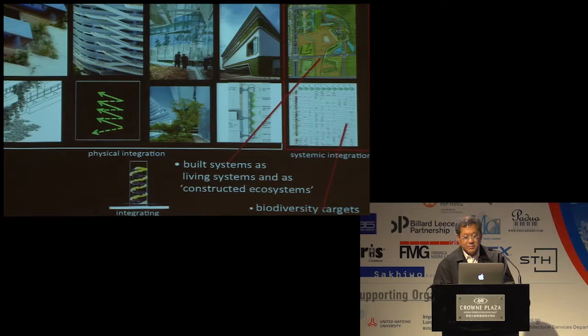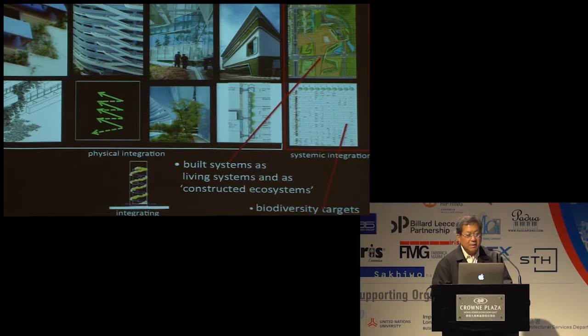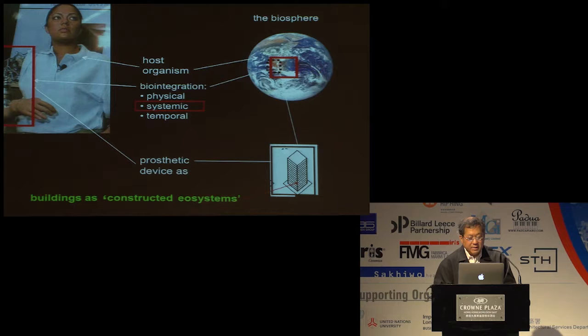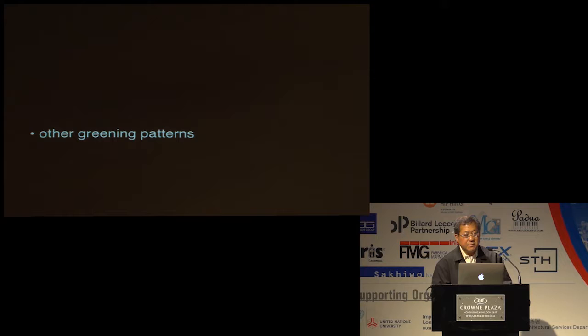The next level of green design is to design buildings as living systems — what I call constructed ecosystems — and to set biodiversity targets. As you can see, doctors are still struggling to connect the organic system with the prosthetic device. If you have an artificial heart and put a battery in it, the heat affects the human body, and connecting to the nervous system raises issues of the body getting septic. So there's still some way to achieve the ideal, both in medicine and surgery and in ecological design.